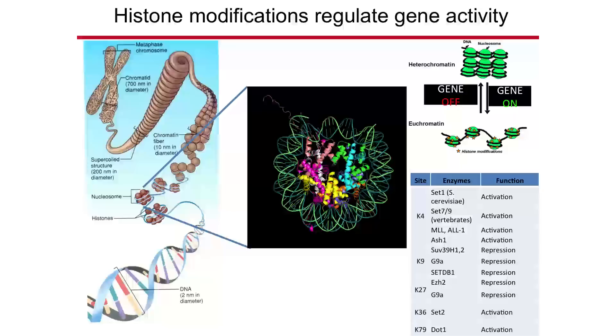We looked carefully at what regulates these gene expression differences. If you look more closely at our chromosomes where genes reside, genes are wrapped around proteins called histones. There is DNA around a core of histone proteins forming small subunits, and these proteins have tails sticking out of the DNA. The structure of the histone dictates whether a given gene is active or not.